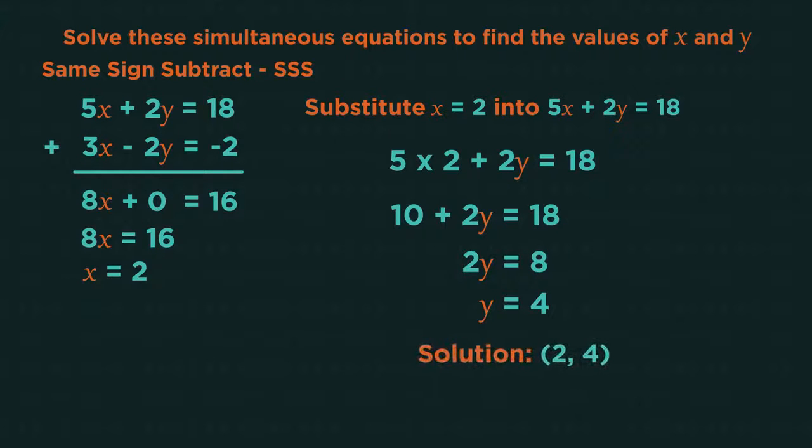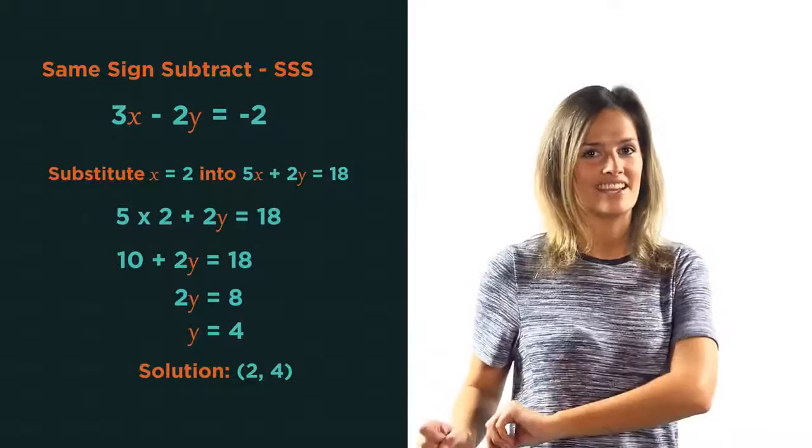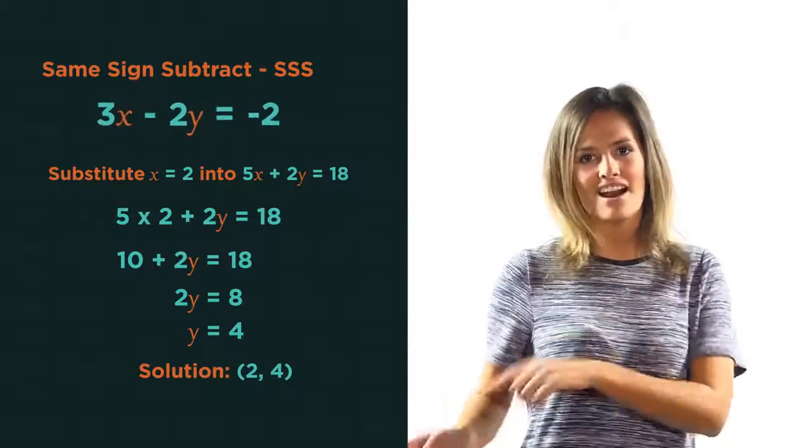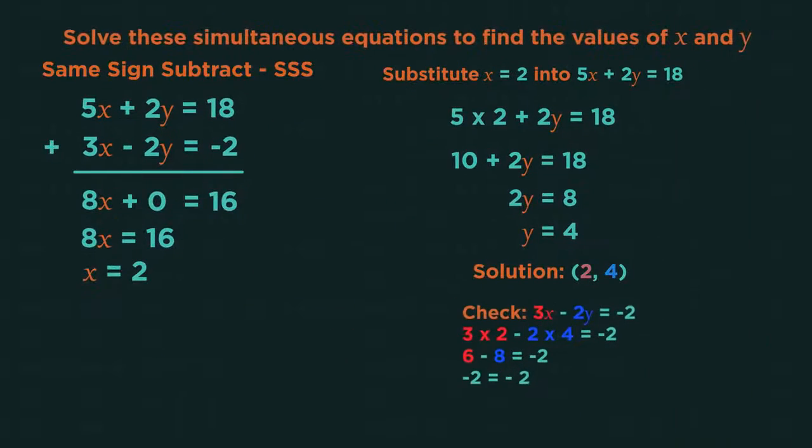So when x is 2, y is 4. This is the solution to these simultaneous equations. It's then really important to check our answers. So we need to substitute 2, 4 back into the other equation. 3 times 2 minus 2 times 4 equals negative 2. So 6 minus 8 is negative 2, which is correct.